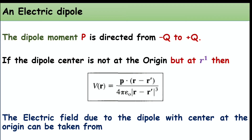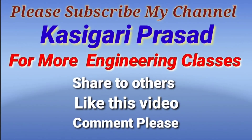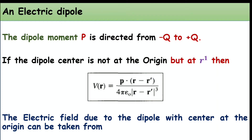The dipole moment p is directed from minus q to plus q, that is from the negative charge to the positive charge. If the dipole center is not at the origin but at some point r′, then the potential is V(r) = p · (r − r′) / (4πε₀ |r − r′|³).